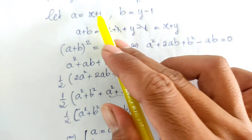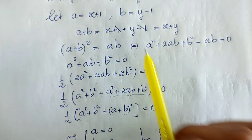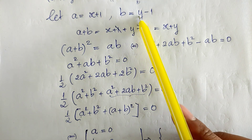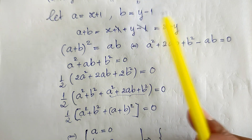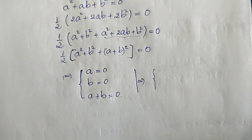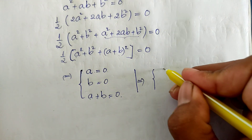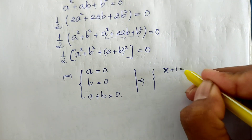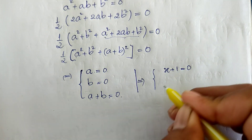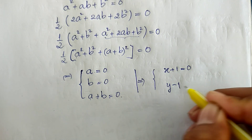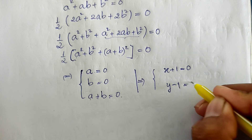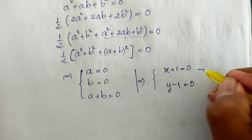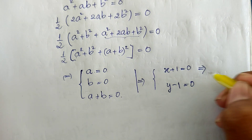Since a equals h plus 1 and b equals y minus 1, we get h plus 1 equals zero and y minus 1 equals zero. So h equals minus 1 and y equals 1.